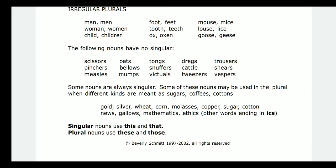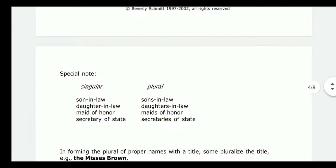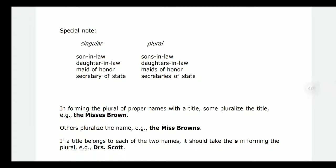Some nouns are used only in the singular, and some are used only in the plural. Different kinds can be expressed as sugars, coffees, cottons, gold, silver. Singular demonstratives are 'this' and 'that', while plural demonstratives are 'these' and 'those'. There are also special note words with different usage rules.